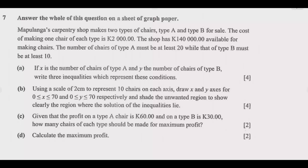For part B, using a scale of 2 centimeters representing 10 chairs on each axis, draw X and Y axes for X: 0 ≤ X ≤ 70 and Y: 0 ≤ Y ≤ 70 respectively, and shade the unwanted region to show clearly the region where the solution of the inequalities lies. For part C, given that the profit on a type A chair is 60 kwacha and on type B is 30 kwacha, find how many chairs of each type should be made for maximum profit and calculate that maximum profit.